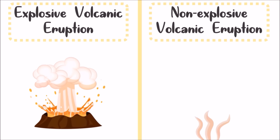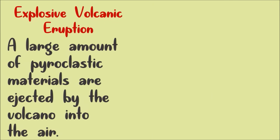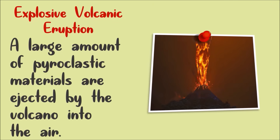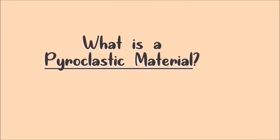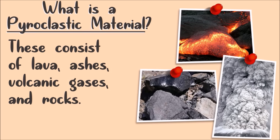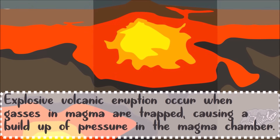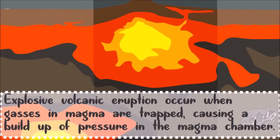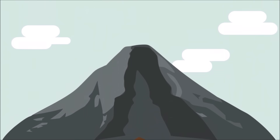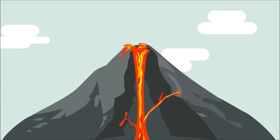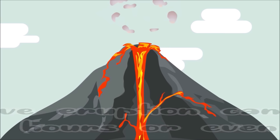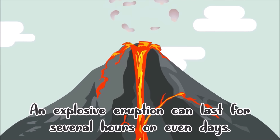A volcanic eruption may be explosive or non-explosive. An eruption is explosive when large amounts of pyroclastic materials are ejected by the volcano into the air. Pyroclastic materials consist of lava, ashes, volcanic gas, and rocks. An explosive volcanic eruption occurs when gases in the magma are trapped, causing a buildup of pressure in the magma chamber. As a result, the gases expand very quickly and explode violently, resulting in a loud explosion. An explosive eruption can last for several hours or even days.